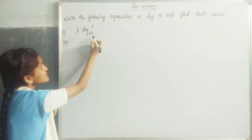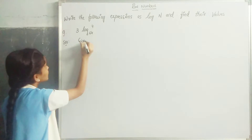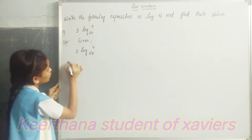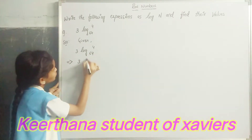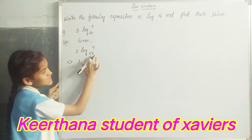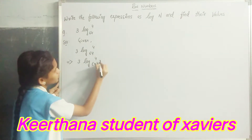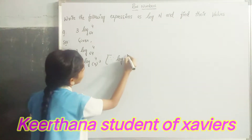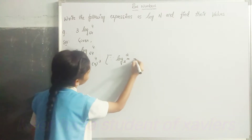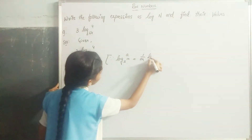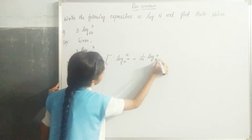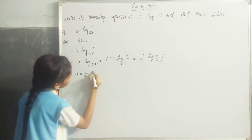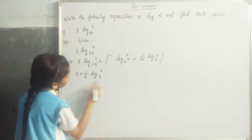Given 3 log 4 to the base 64. This can be written as log 4 cubed to the base 64, since 64 equals 4 cubed. It is in the form of log a to the base x power m, which equals 1 by m log a to the base x. Then it becomes 3 into 1 by 3 log 4 to the base 4.